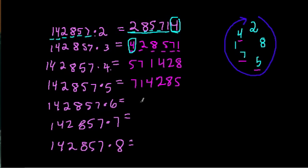Isn't this great? And then 857, we multiply the number by 6, 142,857 times 6, we get 857142. So 857142. And then we feel great, we feel confident.